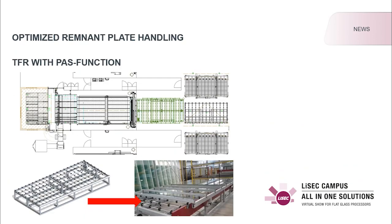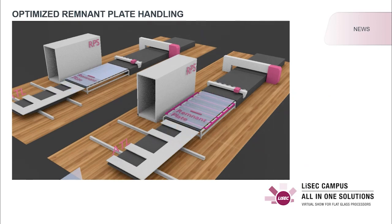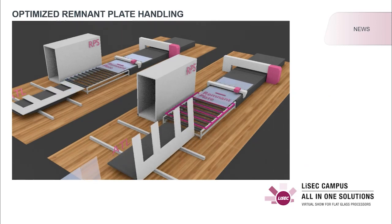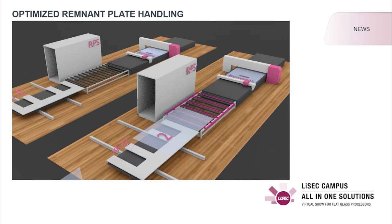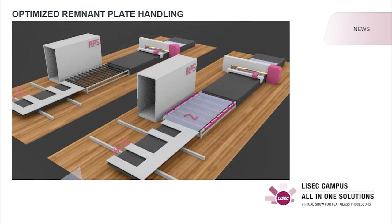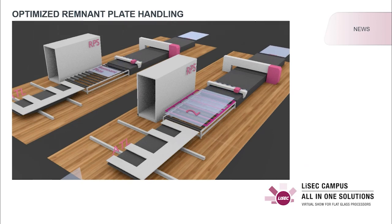Let's have a closer look at the pass function of our transport table TFR. This transport table is placed between the stock and the cutting line and is equipped with a lifting function for the raw glass sheet. While the remnant plate is cut on the cutting table, the tiltable transport table ATL already delivers the next raw glass sheet, which is lifted onto the TFR. When the remnant plate is ready, it can be transported back immediately into our remnant plate buffer RPS. In the meantime, the raw glass sheet on the TFR is lowered and transported onto the cutting table. With this lifting function, the handling of remnant plates has nearly no impact on the cycle time.